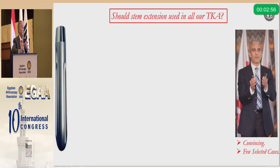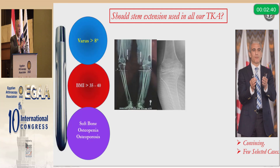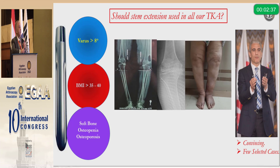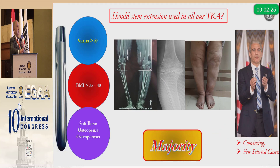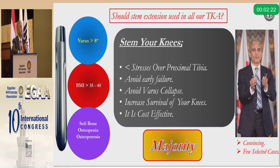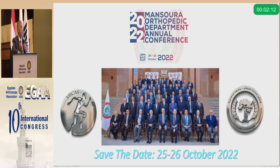Should we use a stem extension in all of our primary knees? Based on the literature, varus deformity of 8 degrees, BMI 35 to 40, soft bone, osteopenia, and osteoporosis are indications for using a stem in knee replacement — and these are characteristics seen in the majority of our patients. Therefore, the recommendation is to stem the knee to decrease stresses over the proximal tibia, avoid early failure, avoid varus collapse, increase knee survival, and because it is cost-effective.